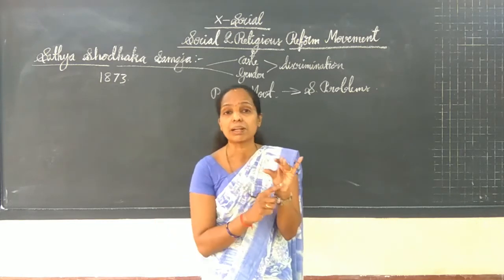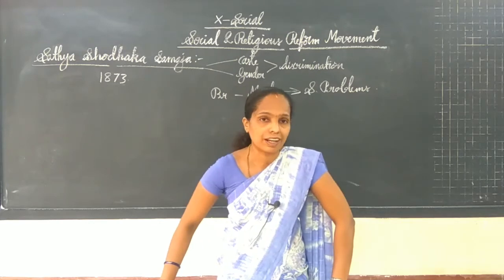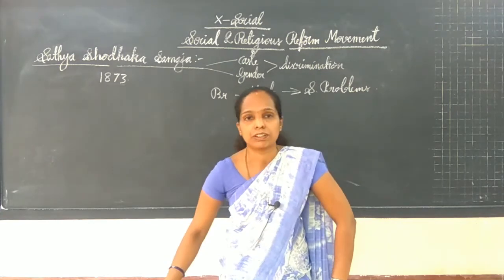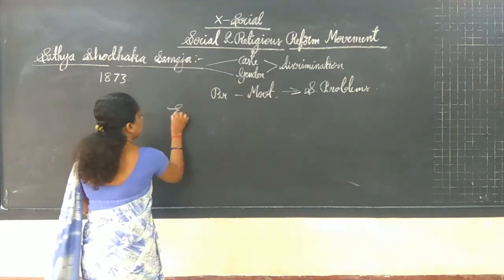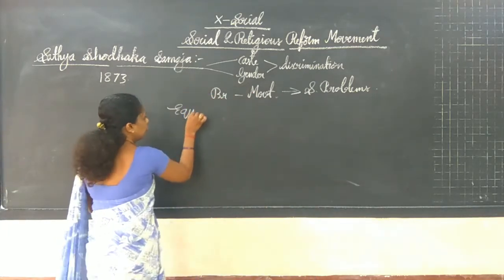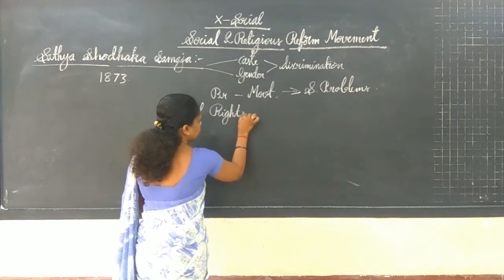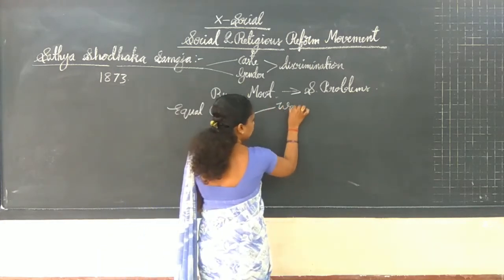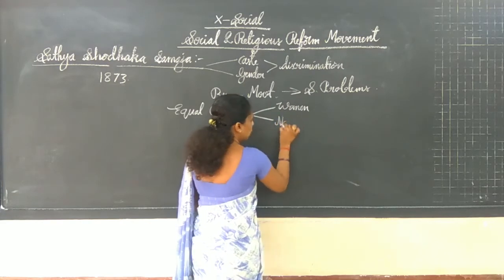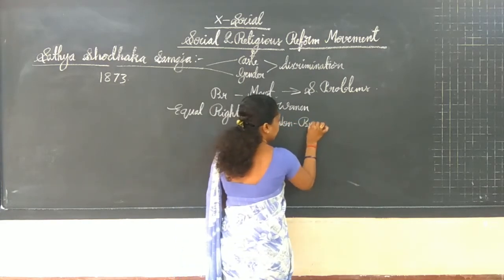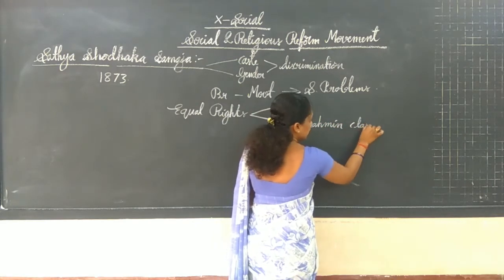Non-Brahmin means those who live as non-Brahmins - people other than Brahmanas, Kshatriyas, Vaishyas, and Shudras. Along with that, women also. The goal was to view and give equal rights to women and also to non-Brahmin classes.